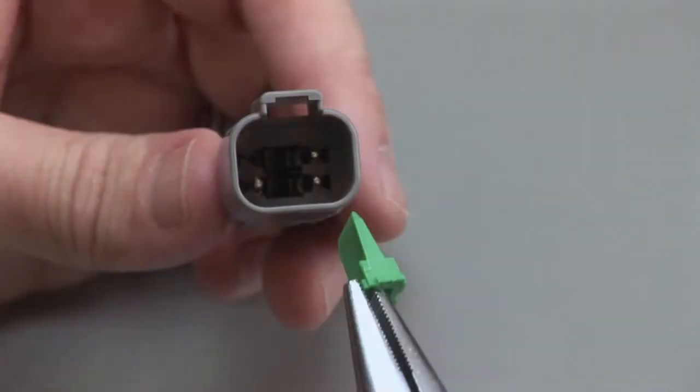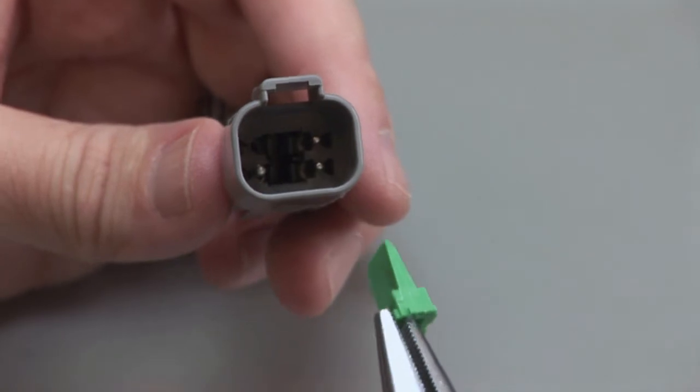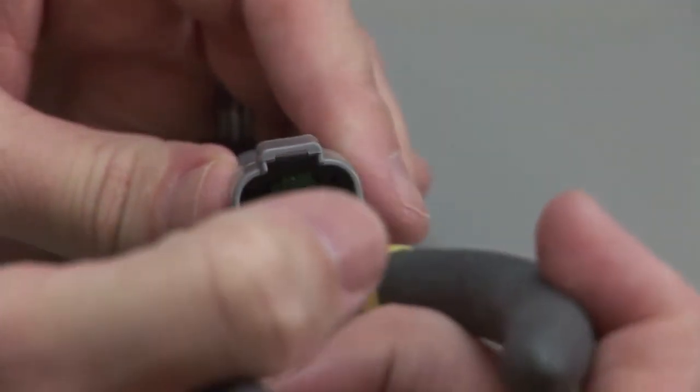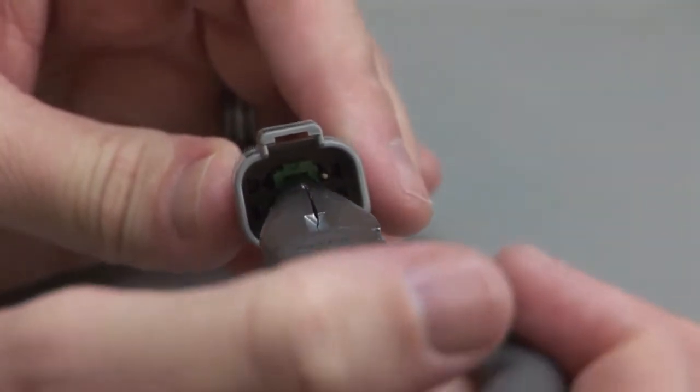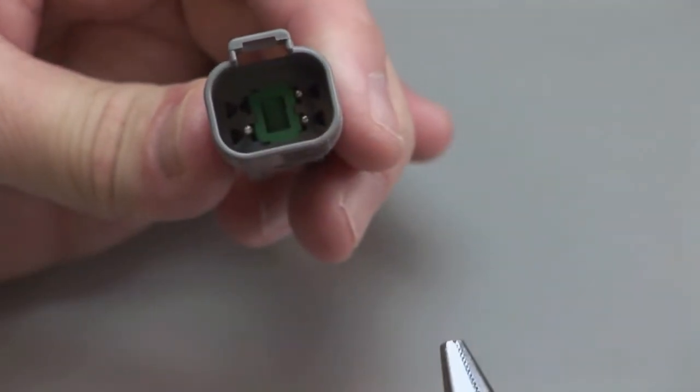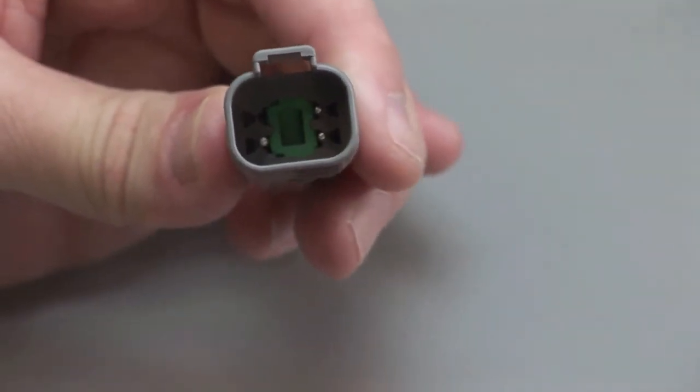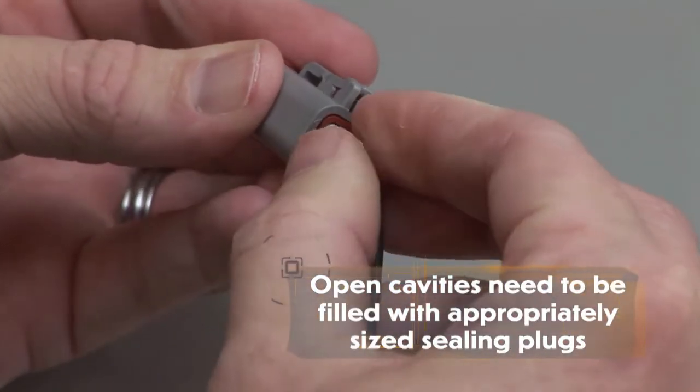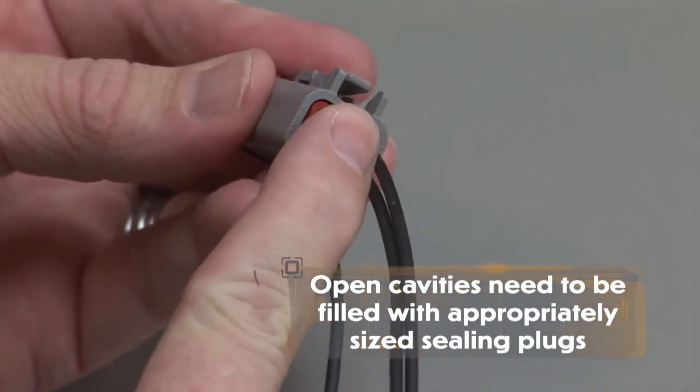To insert the wedge lock in the receptacle housing, select the appropriate wedge lock. Carefully align the wedge lock between the locking fingers in the interface of the receptacle. Apply downward pressure until a click is heard and felt. Please note that if you have open cavities, they will need to be filled with appropriately sized sealing plugs.